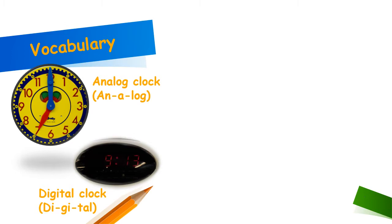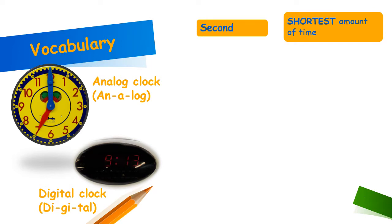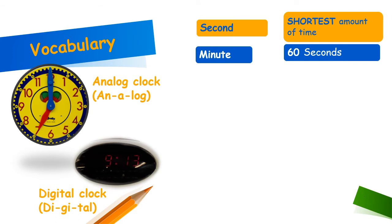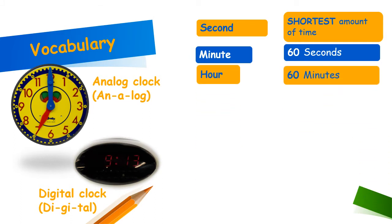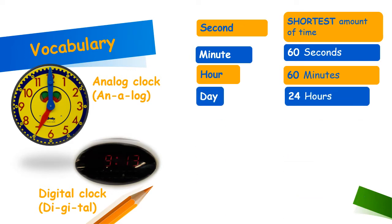Next we have the time segments. The first one is second — it is the shortest amount of time. It takes one second to say 'one elephant.' Next are the minutes. There are 60 seconds in one minute, so if you said 'one elephant' 60 times, it should take you a minute. Next we have the hour — an hour is 60 minutes. A day is 24 hours.